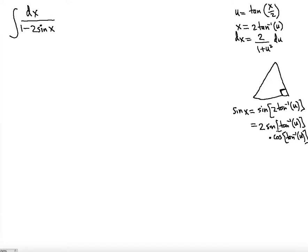We know this from the double angle formula: sine of 2x equals 2 sine x cosine x. So arctan(u) means the angle whose tangent is u — that is, opposite divided by adjacent equals u over 1, so the opposite side is u and the adjacent side is 1.